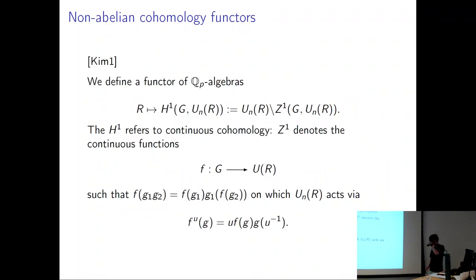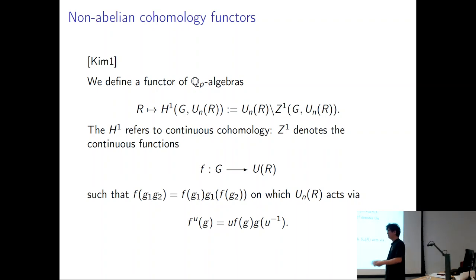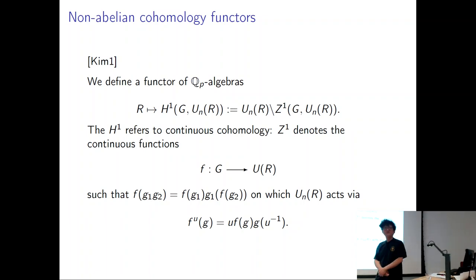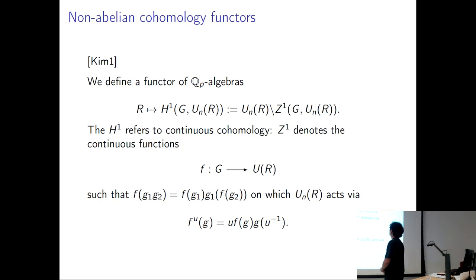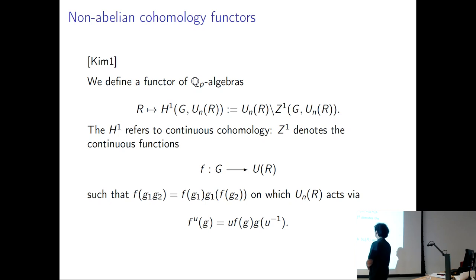The beginning of this construction of viewing non-abelian homology as a space follows a baby version of the Grothendieck philosophy: we first define a functor. We want to end up with a scheme over QP, so I'll first define a functor of QP algebras. The functor just associates to a QP algebra this homology set. Z1 just refers to one-cocycle functions from G to the R-points of U.